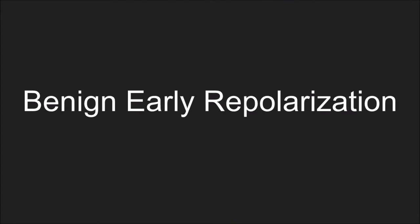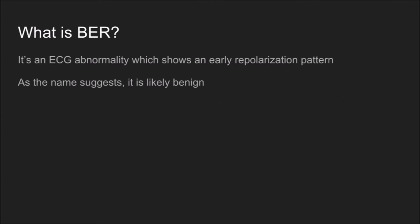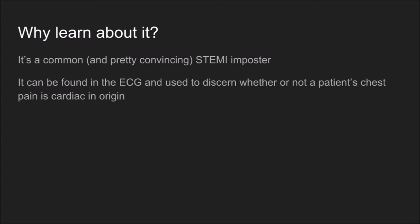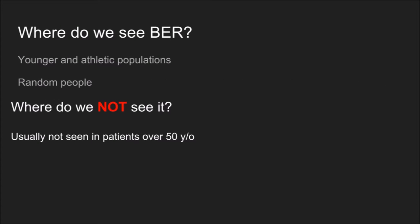Benign early repolarization, or BER, is an ECG abnormality which shows an early repolarization pattern. As the name suggests, it's likely benign. The bigger question is why we should learn about it — it's a common and pretty convincing STEMI imposter. It's caught more than one person. It can be found on the ECG and used to discern whether or not a patient's chest pain is cardiac in origin.